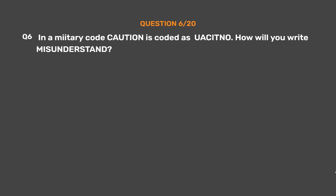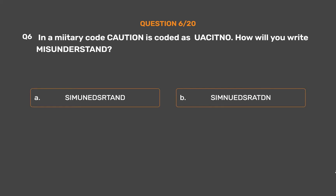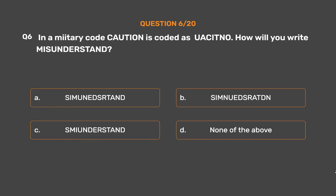Question number 6: In a matrix code, 'caution' is coded as 'VASITANU'. How will you write 'misunderstand'? Option A: SIMUNEDSATAR. Option B: SIMUNEDSURATADU. Option C: SMUDERSTAND. Option D: None of the above.